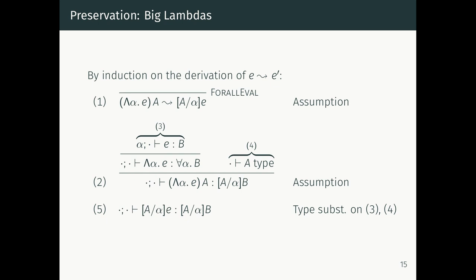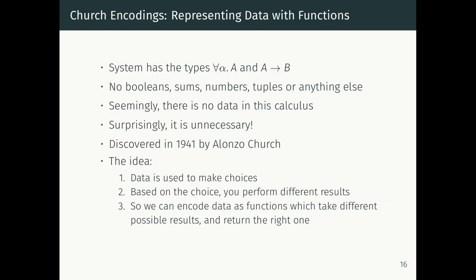You should check the routine cases for yourself and compare them to the type safety proof for the simply typed lambda calculus — that's really the only way to convince yourself you're seeing only the important cases on these slides. Once you've done that, you'll see the proof of type safety for System F is only a little bit harder than for the simply typed lambda calculus, but for that little bit of extra difficulty we get an awful lot — the ability to write Church encodings.